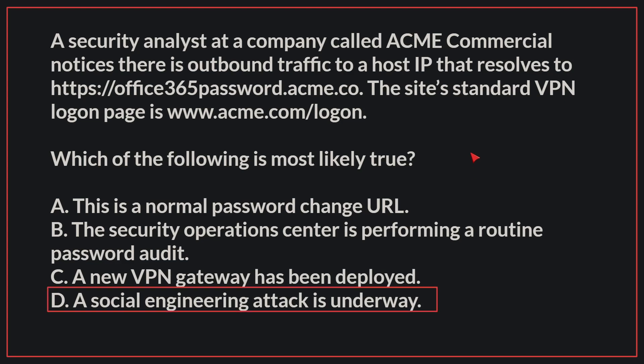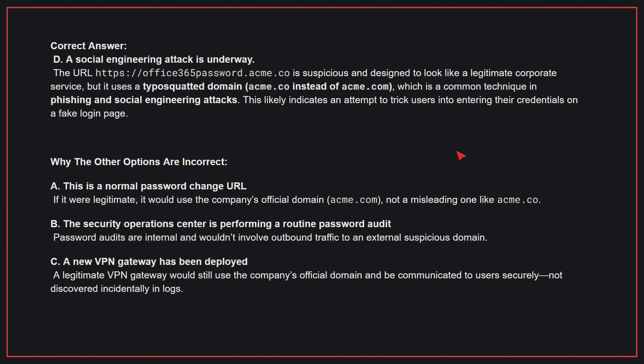The correct answer is D: A social engineering attack is underway. The URL HTTPS office365password.acme.co is suspicious and designed to look like a legitimate corporate service, but it uses a typosquatted domain, which is a common technique in phishing and social engineering attacks. This likely indicates an attempt to trick users into entering their credentials on a fake login page.